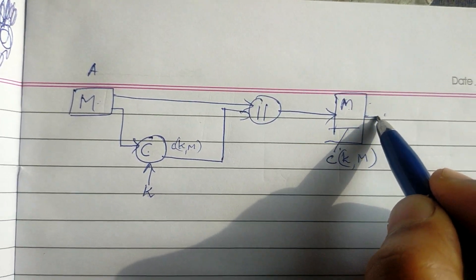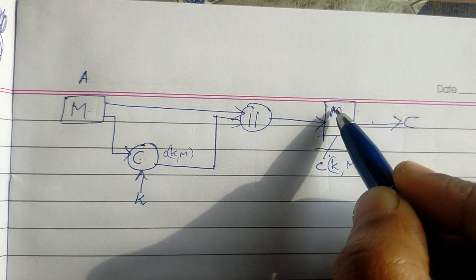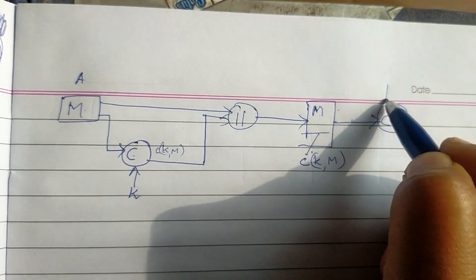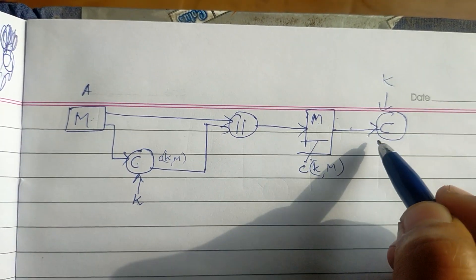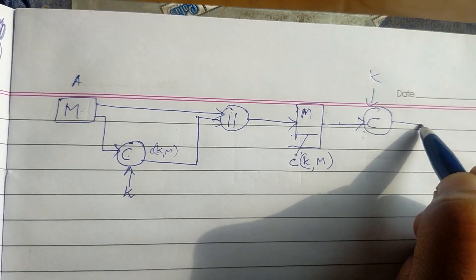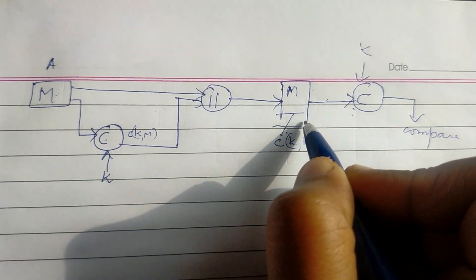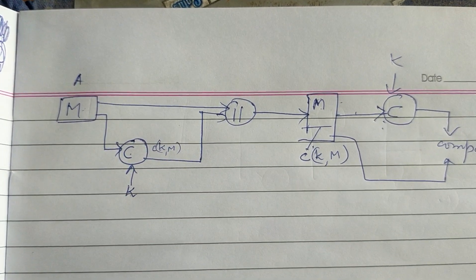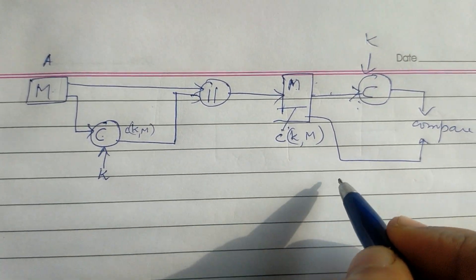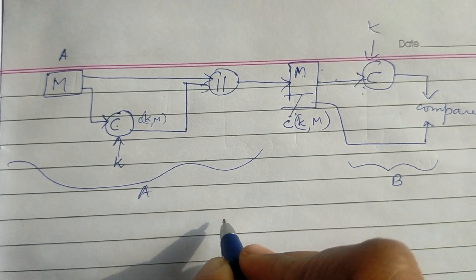This is the sender side. We send message plus MAC to the receiver side. On the receiver side, we calculate the MAC using the secret key. The message and the secret key are applied. The receiver generates the MAC function and compares it. If they match, the message has not been altered.